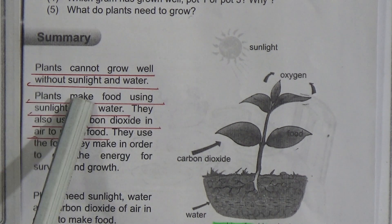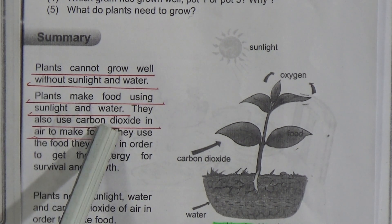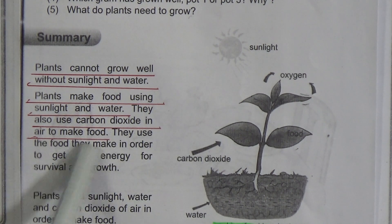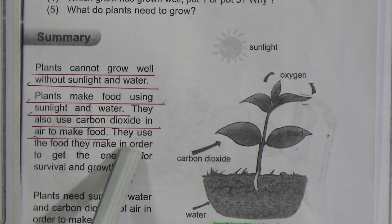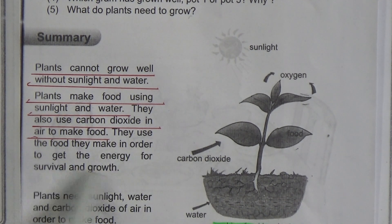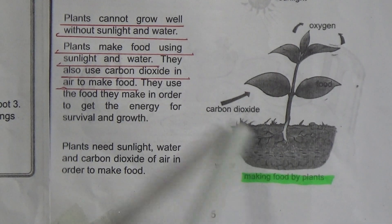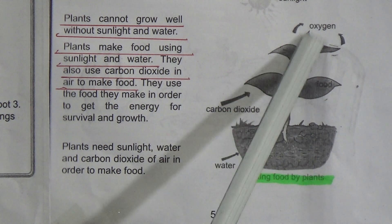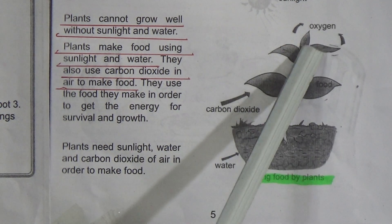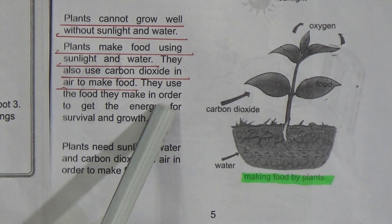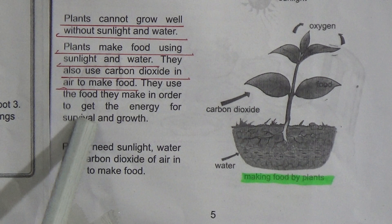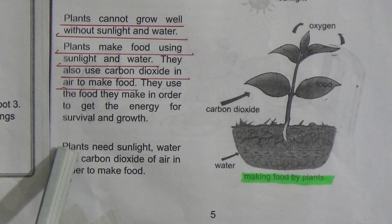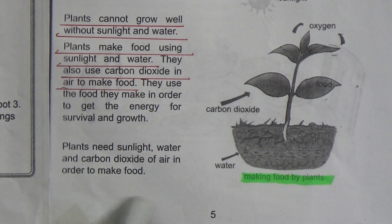Plants make food using sunlight and water. Underline this line. They also use carbon dioxide from air to make food. They use the food they make to get the energy for survival and growth. Plants need sunlight, water and carbon dioxide from air to make food.